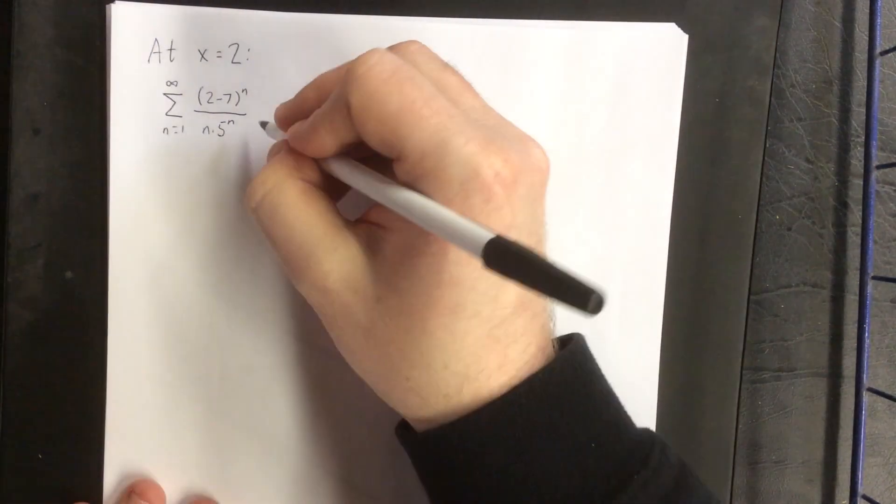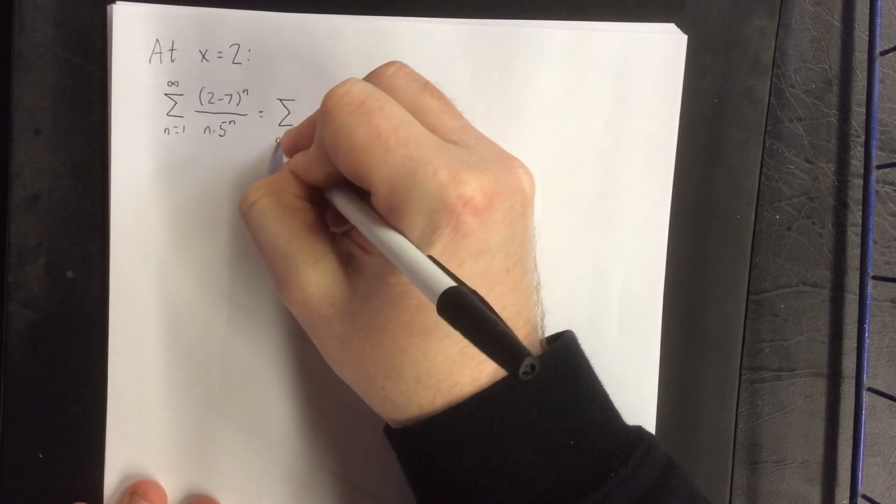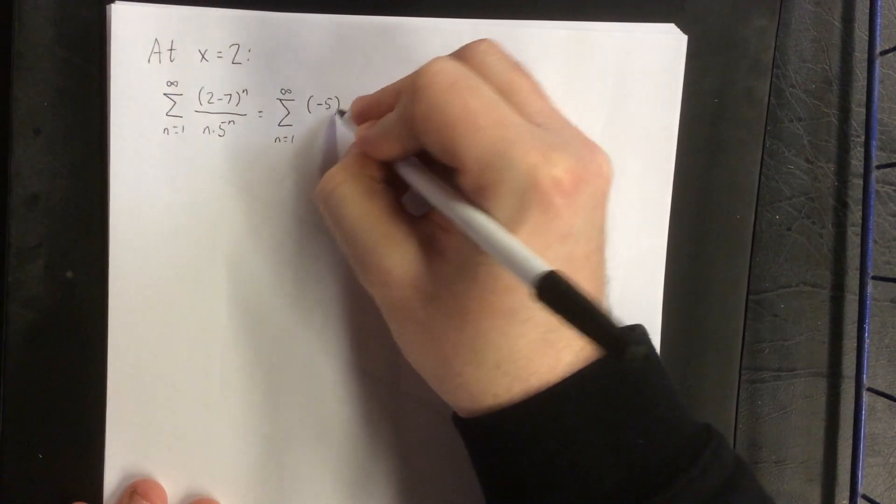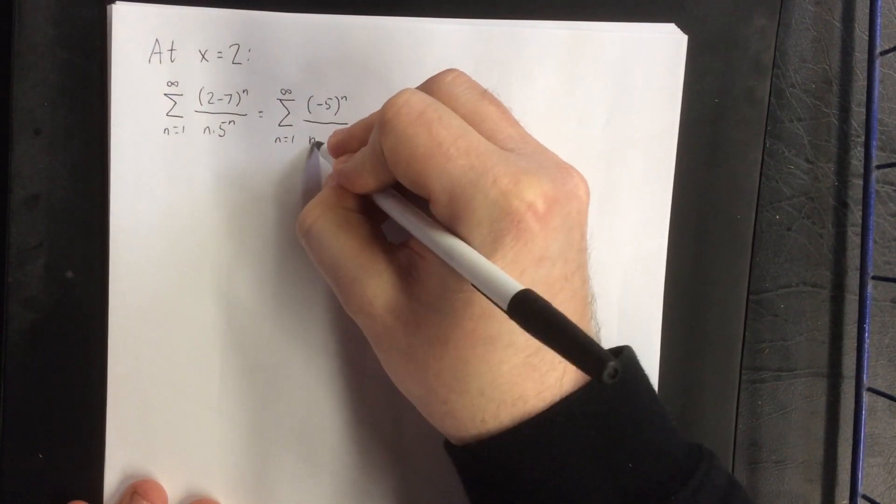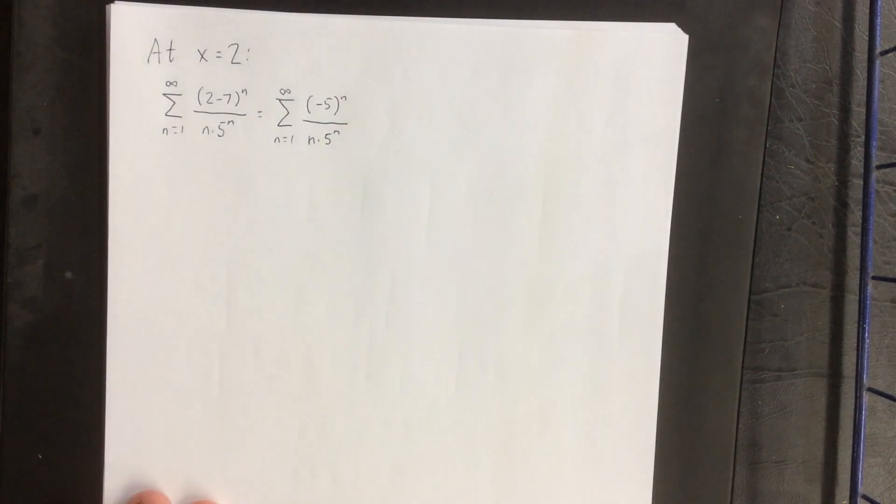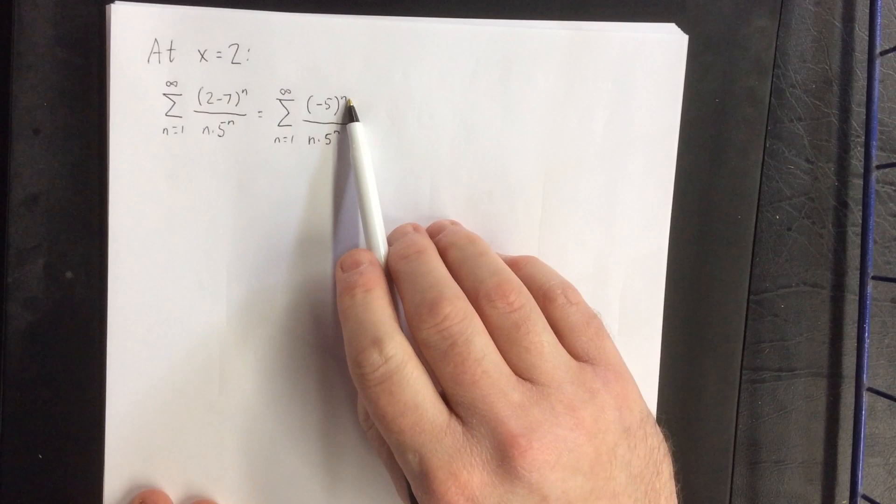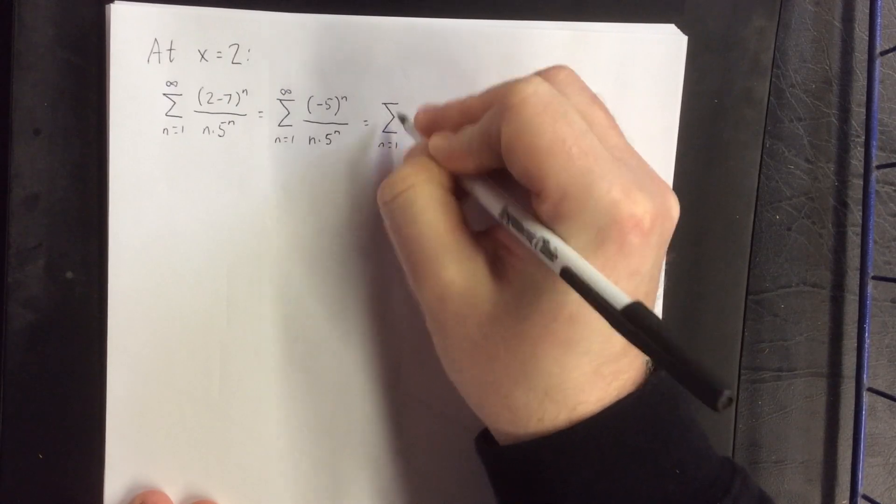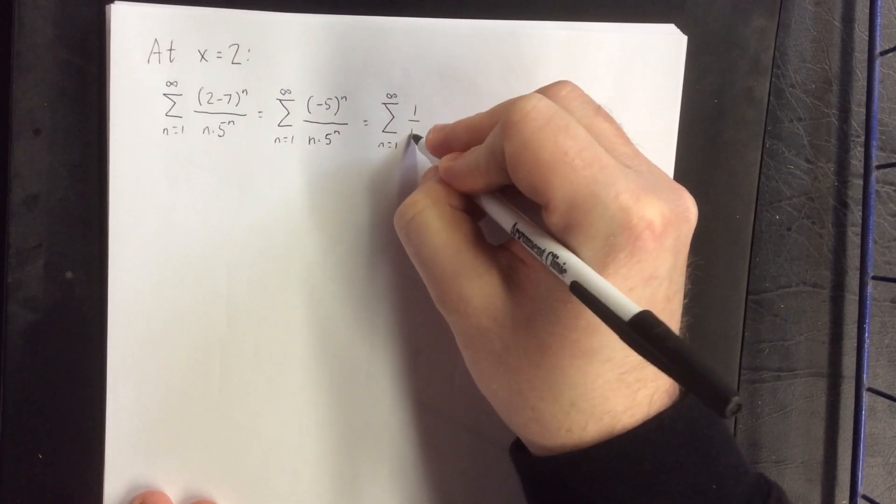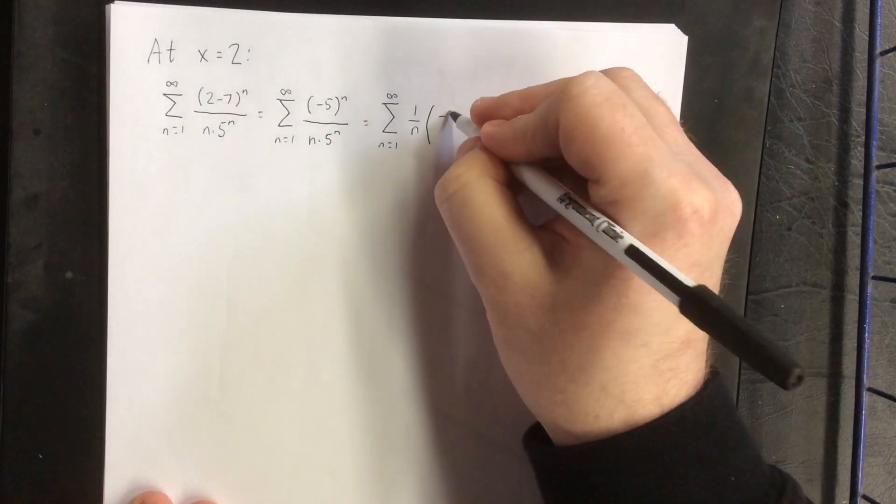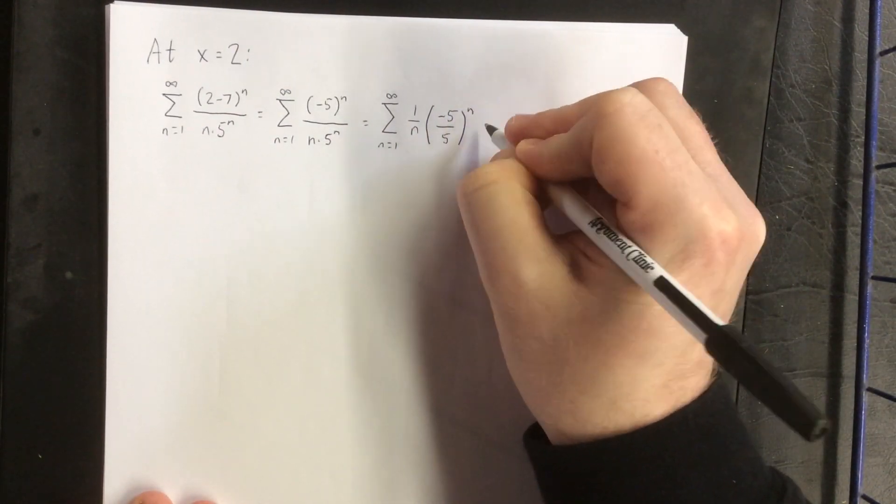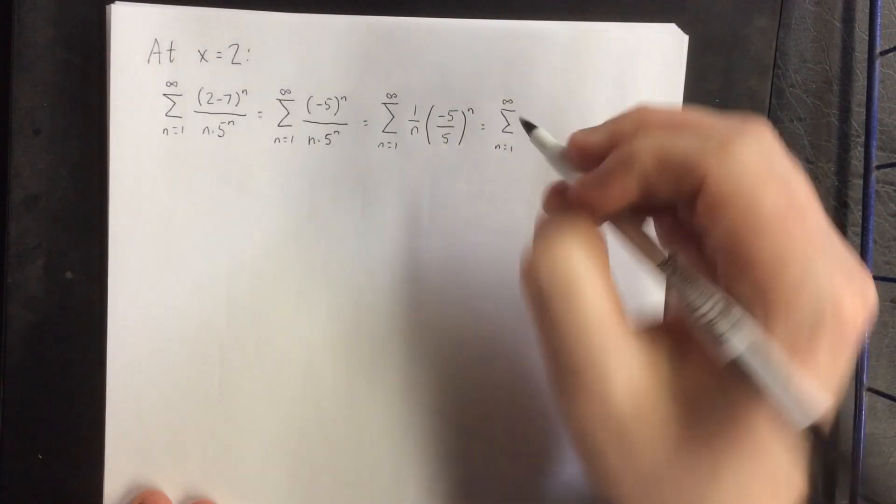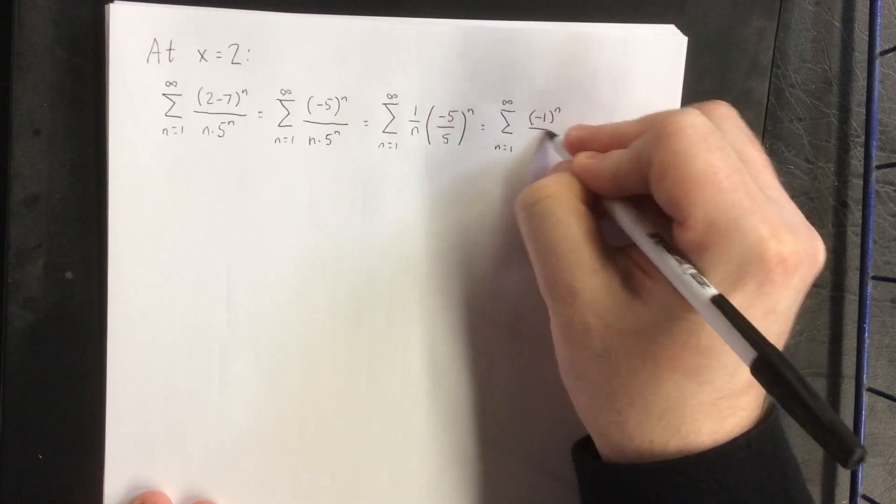Then we'll perform a couple of algebraic manipulations to this. 2 minus 7 is going to give us negative 5 to the n power, and then we'll still have n times 5 raised to the n power. Now when you have negative 5 to the n and 5 to the n and they're being divided, that means that I can factor out the power of n, and it works that way because this is division. n from the denominator will stay as 1 over n, and this will be negative 5 divided by 5 raised to the n power. Simplifying that fraction, negative 5 over 5 will give us negative 1 raised to the n power over n.